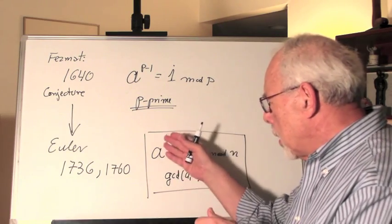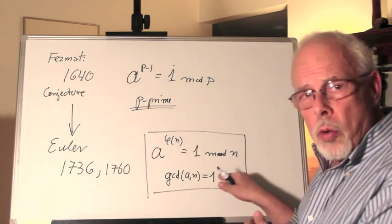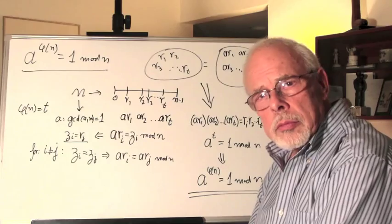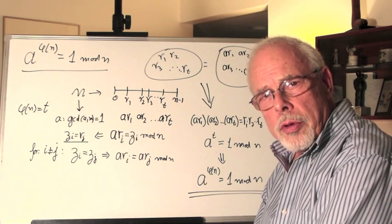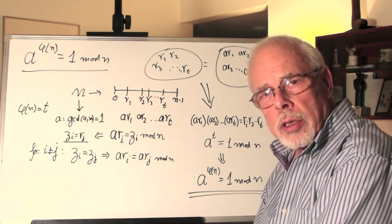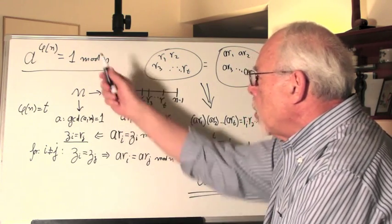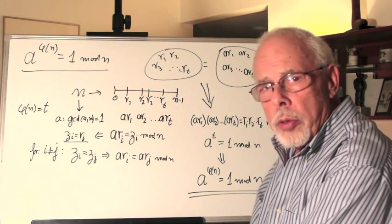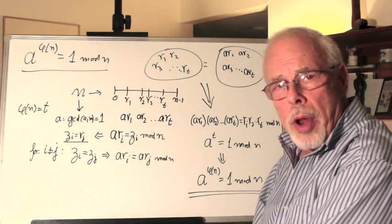Now, let's see how we can prove something so strange. So let's see how we can prove Fermat, or rather Euler, theory. That's the theory: a to the power of phi of n equals 1 mod n, as long as a and n are co-primes.